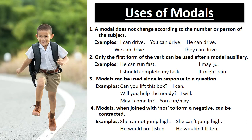Point number two: only the first form of the verb can be used after a modal auxiliary. After modal verbs such as can, could, may, might, will, would, shall, should, we use the first form of the verb. For example: 'can run,' 'should go,' 'may complete,' 'might rain' — all these main verbs are in the first form. However, if 'have' comes after the modal, then after 'have' we use the third form of the verb. For example, 'I could have gone.'